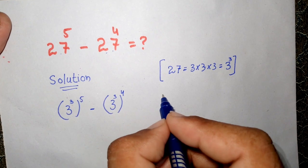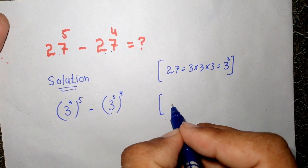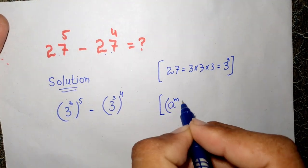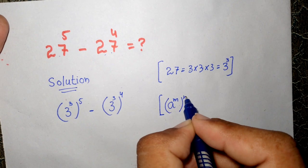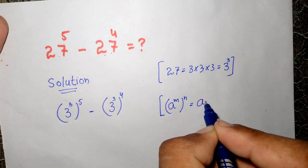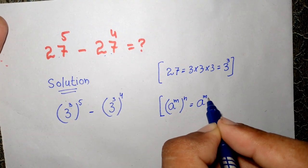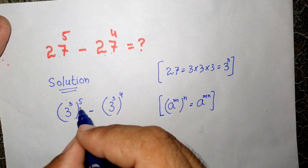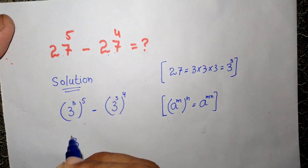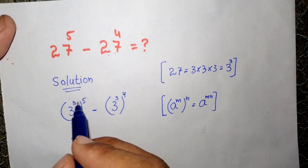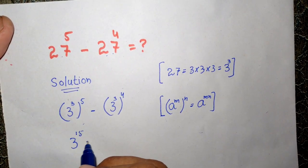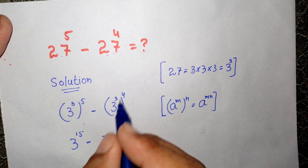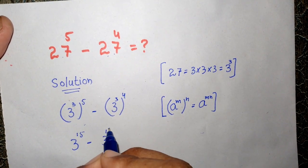Now we also know that a to the power of m, to the whole power of n, is equal to a to the power of m times n. So this will become 3 to the power of 5 times 3, which is equal to 15, minus 3 to the power of 3 times 4, which is equal to 12.